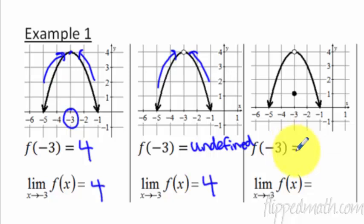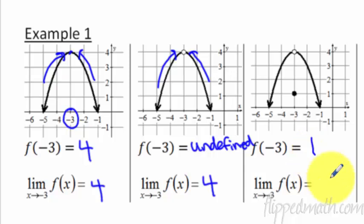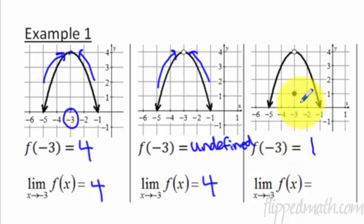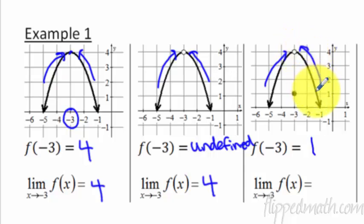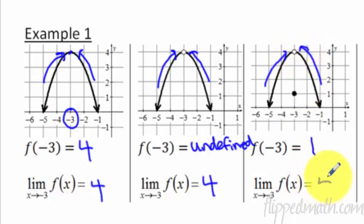This one: f of negative 3 — what's the y value when x equals negative 3? You go to where it's filled in, and it equals 1. That's what the function equals. But the limit is not about where the dot is. Draw these little arrows — the limit is where the graph is approaching, and it's going closer and closer from both the left and the right side to a y value of 4.